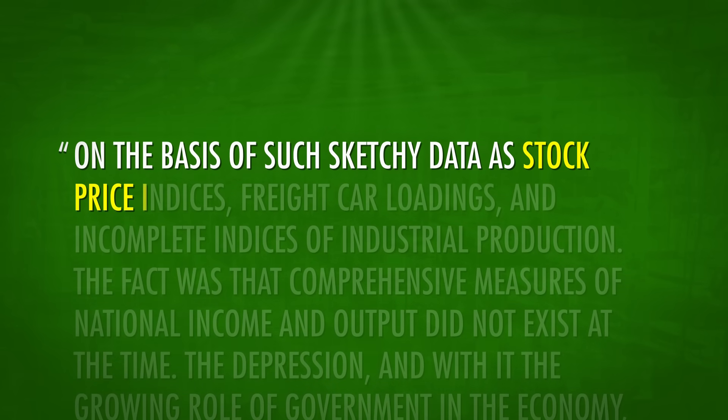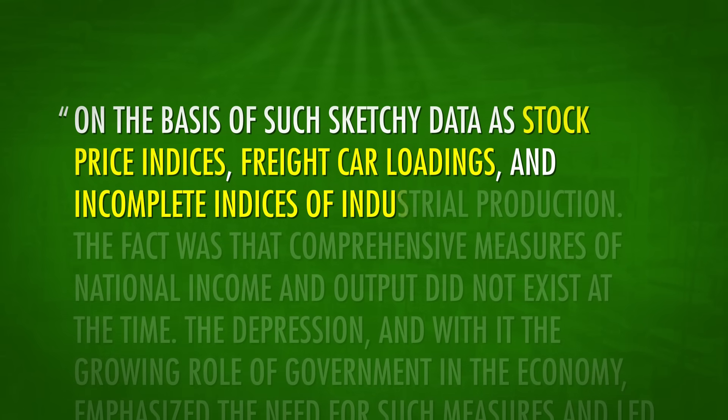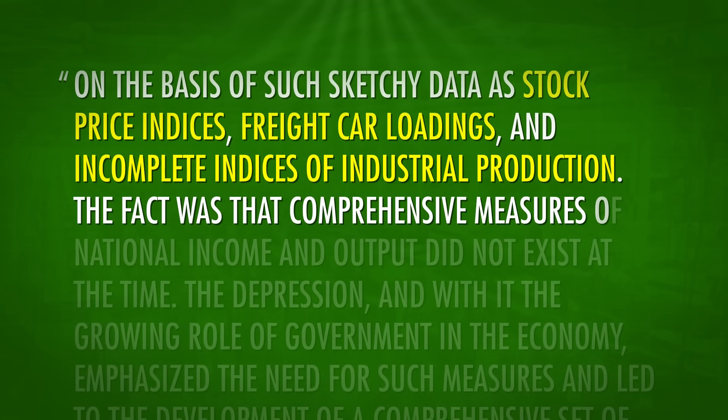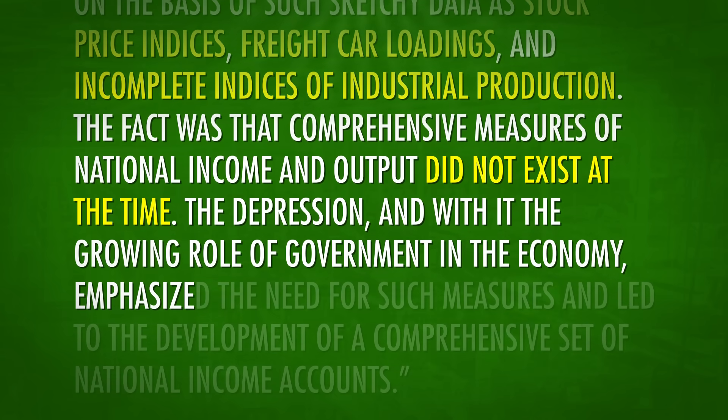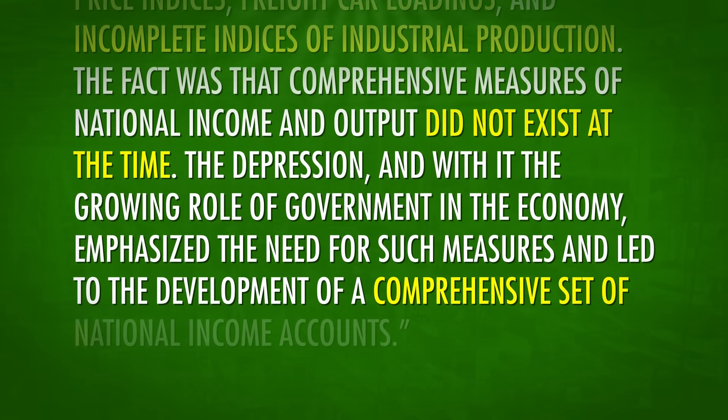GDP can be a little problematic — not all countries measure GDP in the same way. In recent years, some European Union countries have started experimenting with counting underground markets like the sex trade and drug trade as part of the total. And GDP isn't even that old an idea. During the Great Depression, economic decisions were made on the basis of such sketchy data as stock price indices, freight car loadings, and incomplete indices of industrial production. Comprehensive measures of national income and output did not exist, and the depression emphasized the need for such measures, leading to the development of a comprehensive set of national income accounts. So GDP was invented to account for national income, and it may not necessarily provide a complete picture of a country's economy, but for the moment, it's what we've got.